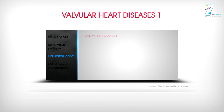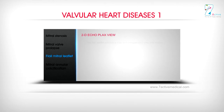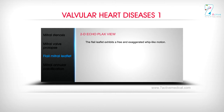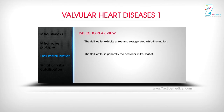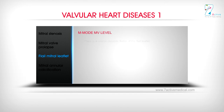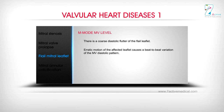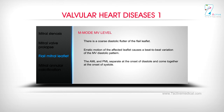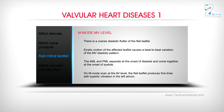Flail Mitral Leaflet — 2D Echo PLAX View. The flail leaflet exhibits a free and exaggerated whip-like motion; it is generally the posterior mitral leaflet. M Mode MV Level: There is a coarse diastolic flutter of the flail leaflet. Erratic motion of the affected leaflet causes beat-to-beat variation of the MV diastolic pattern. The AML and PML separate at the onset of diastole and come together at the onset of systole. On M Mode scan at the AV level, the flail leaflet produces fine lines with systolic vibration in the left atrium.